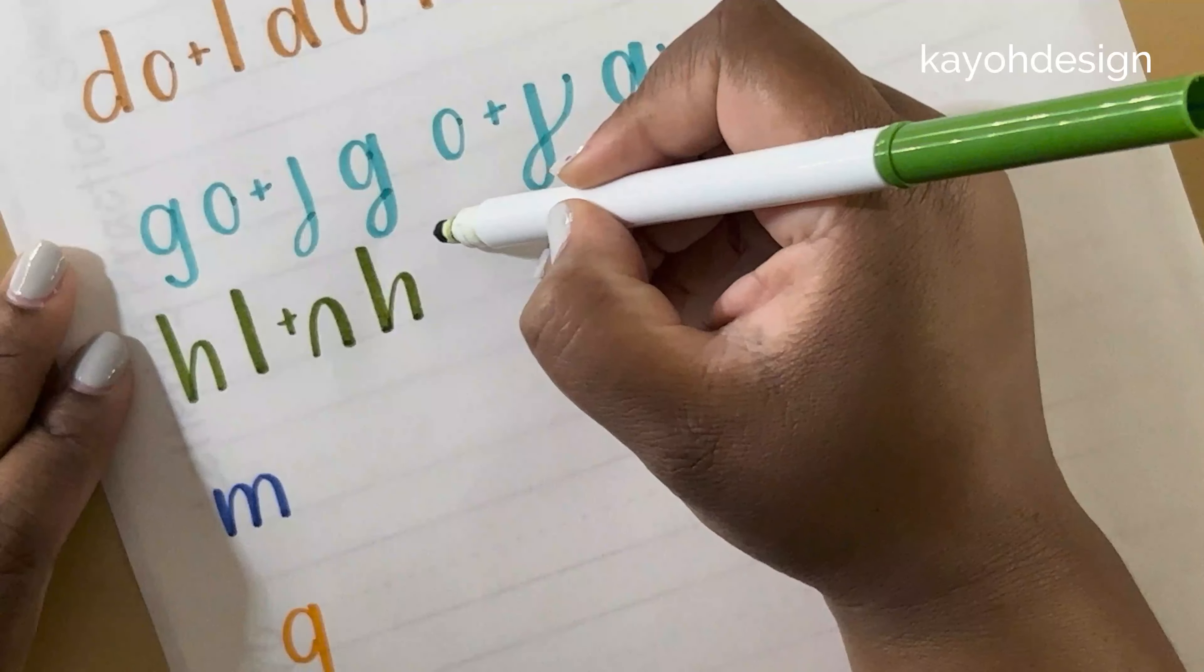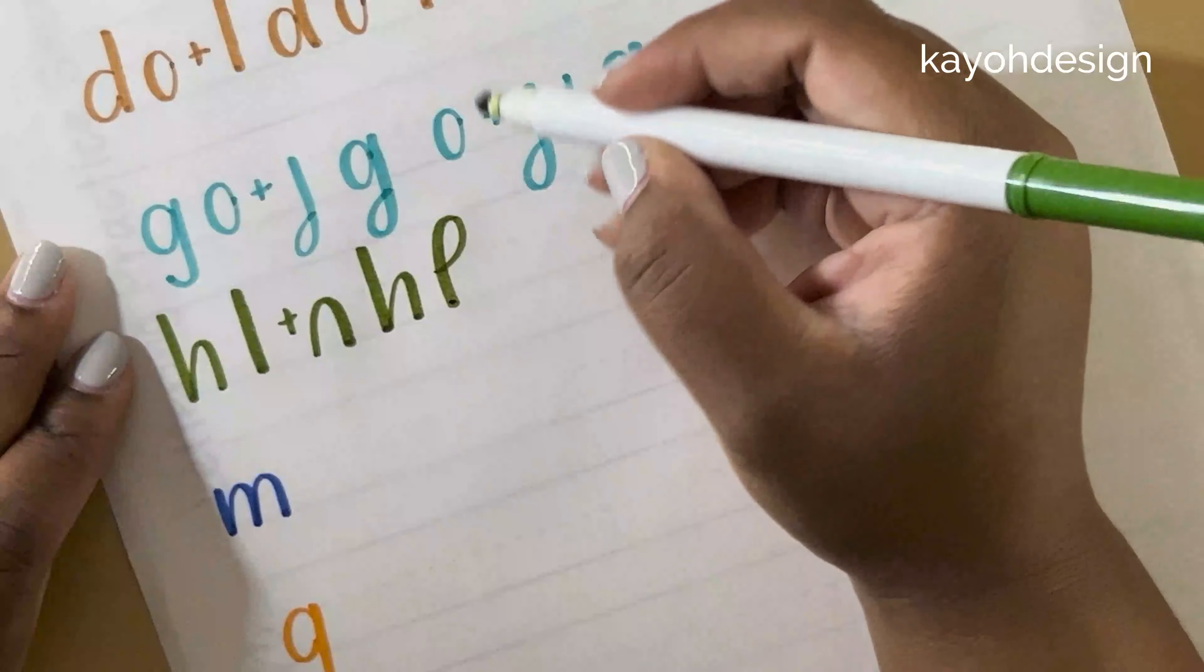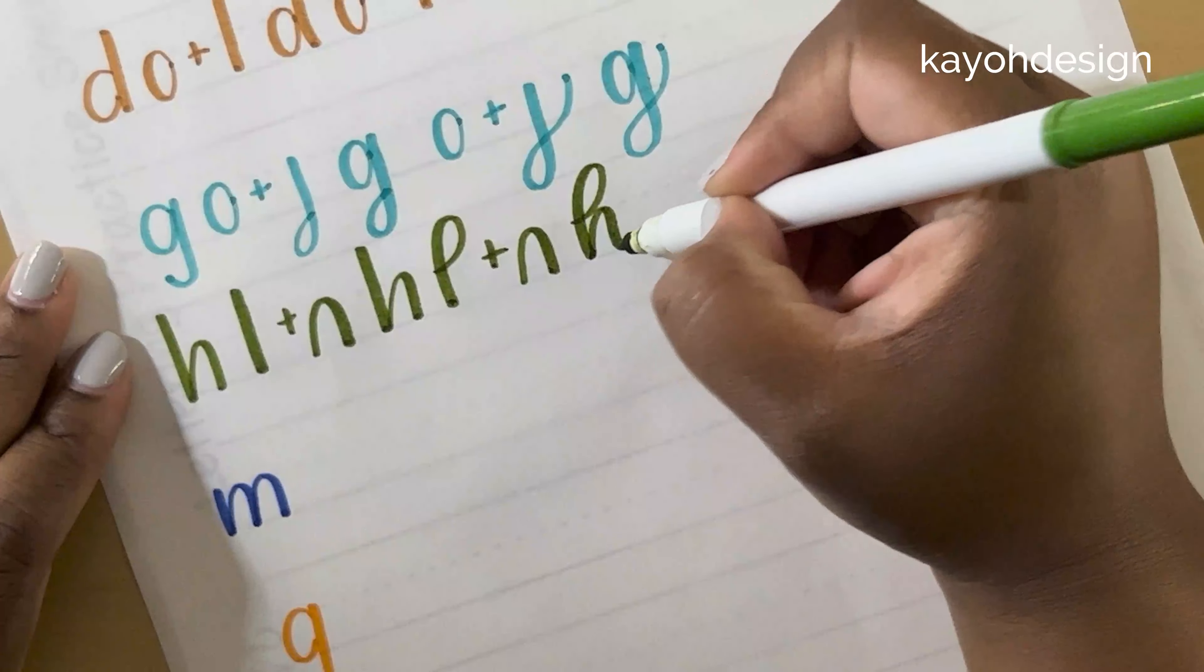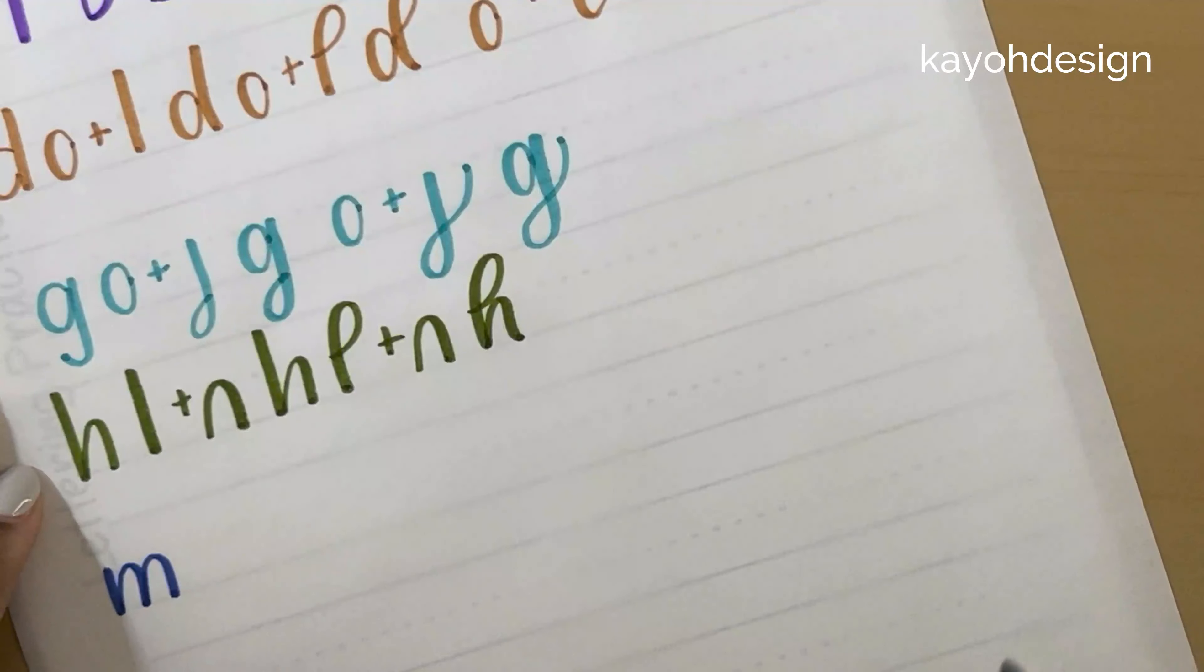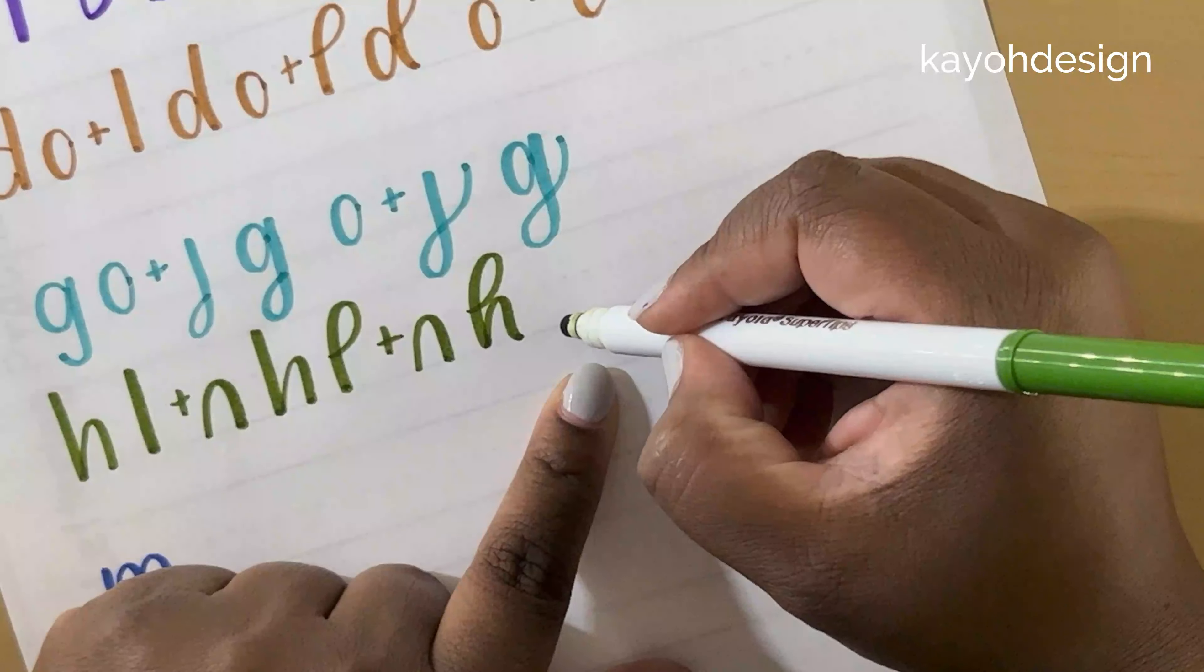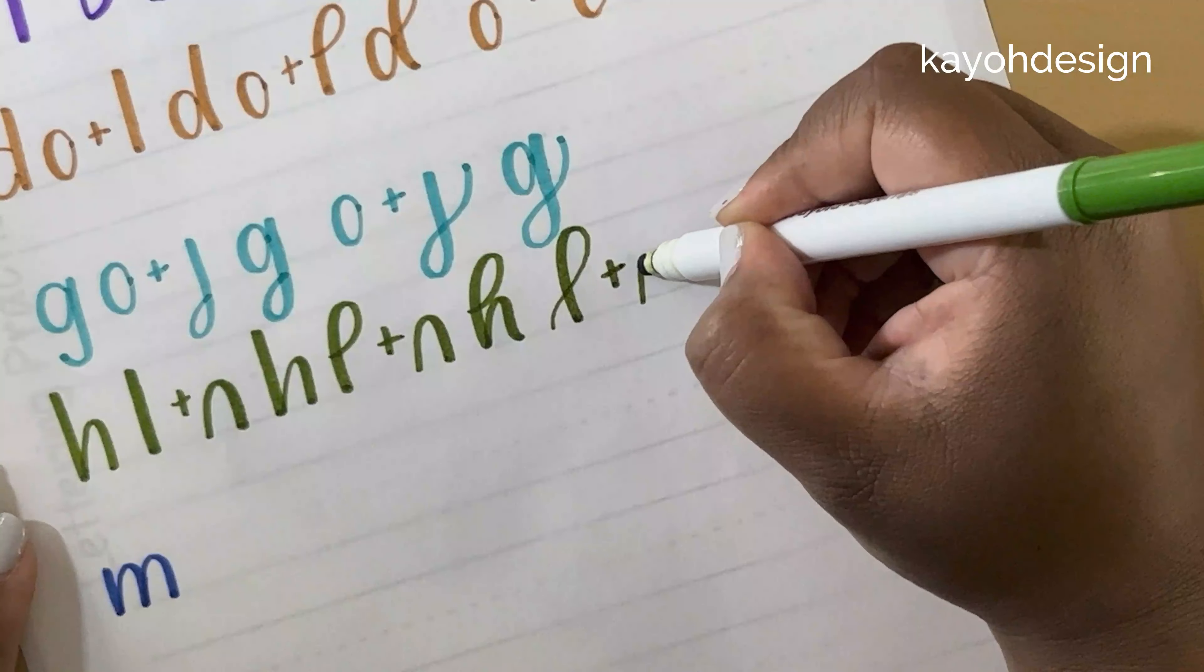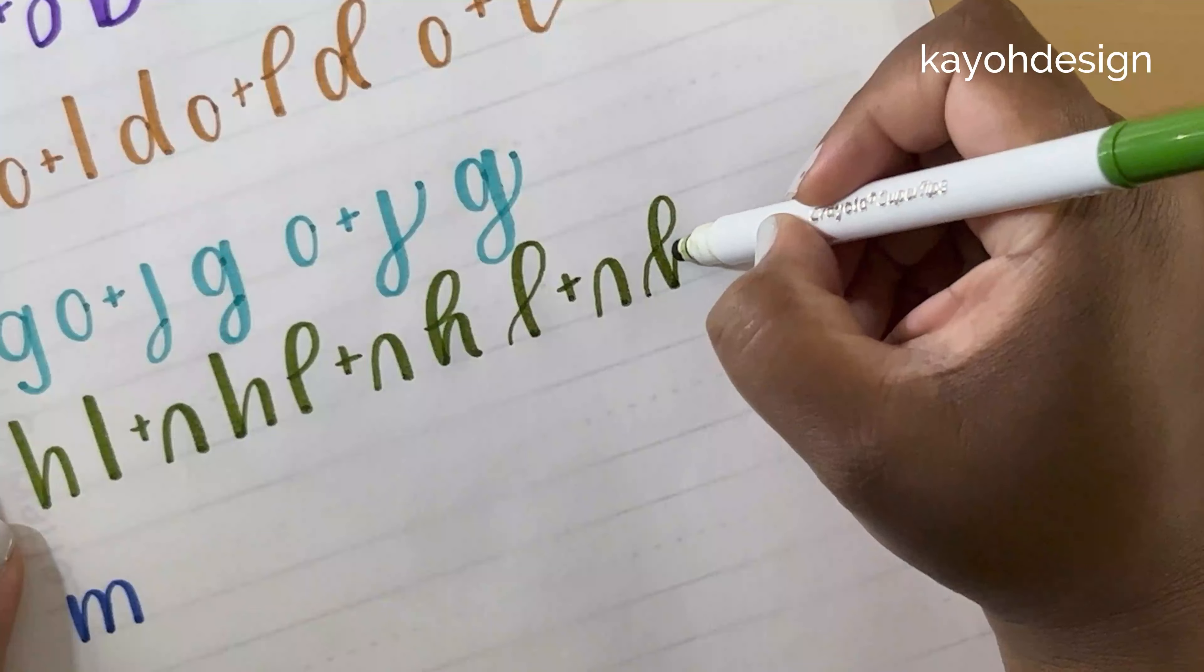Another way you can draw H would be with the loop. I call it a fancy loop. It starts at the baseline, goes up and around. Down and back down. Again, that upside down U, which gives you that.